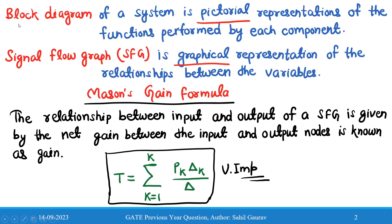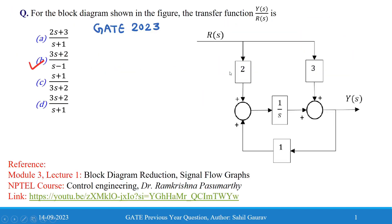The term 'block diagram' means it is a pictorial representation of the functions performed by each element, while the signal flow graph represents the graphical representation of the relationship between the variables. The basic difference is that the block diagram is a pictorial representation while the signal flow graph is a graphical representation. In this question we are given a pictorial representation.